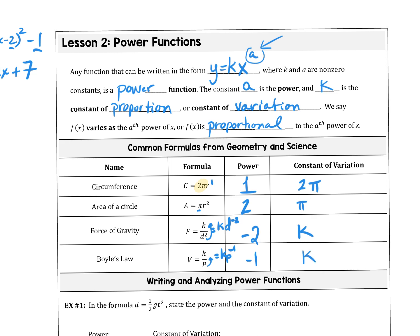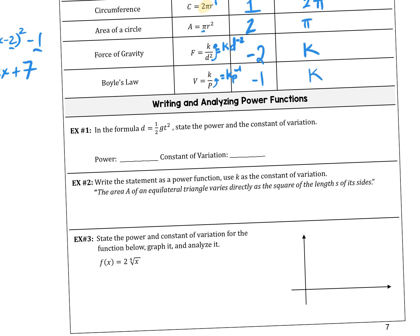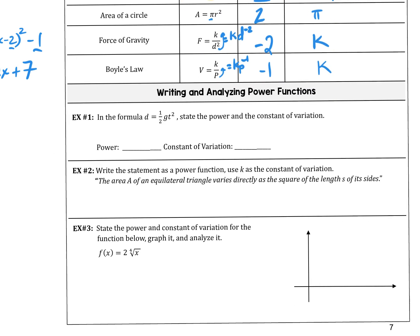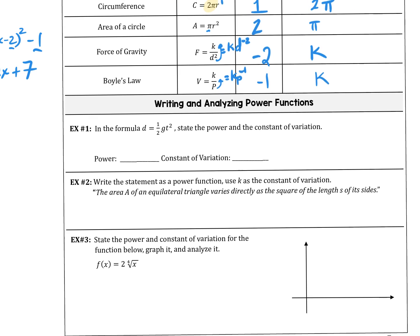Do we all understand how to tell if something is a power function? We bring that lead coefficient up. Now you try: the formula D equals ½gt². State the power and the constant of variation. The power is 2 — that's what's attached to t. And the constant of variation is everything else other than the variable, so it's ½g.